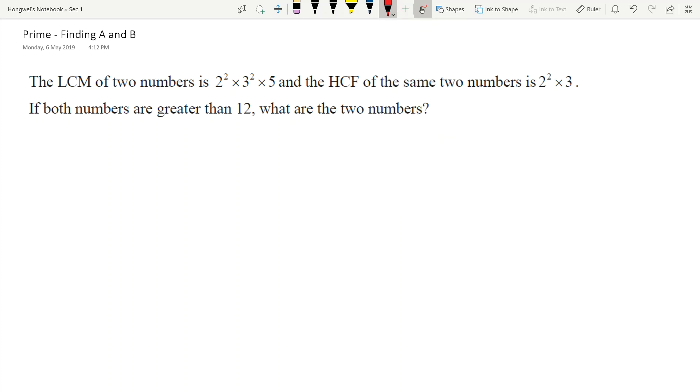By using the comparison method, I take the higher power of each prime factor, because LCM is a multiple. Multiple means we need to make the number bigger, so that's why we take the higher power among the two numbers.